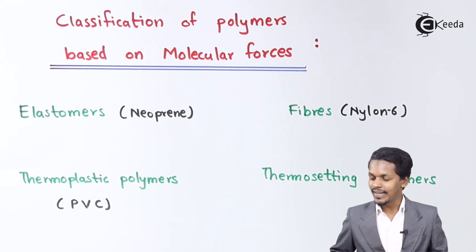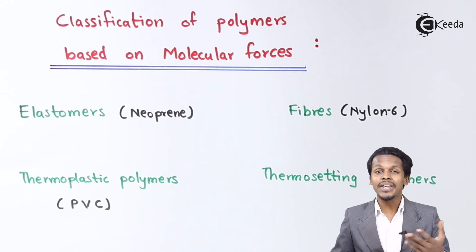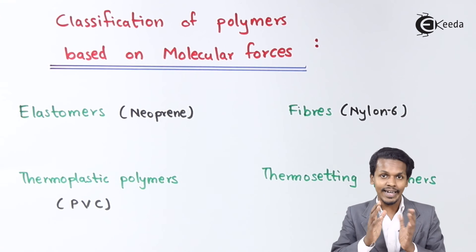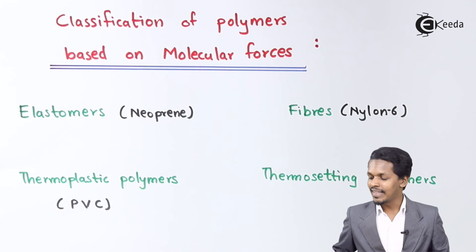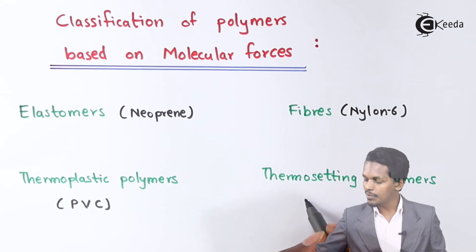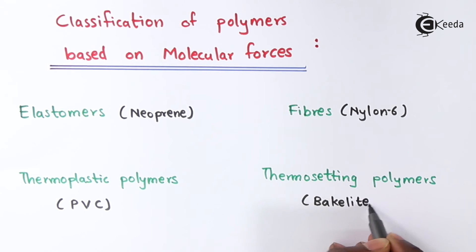Thermosetting polymers are polymers which cannot be reshaped or remolded once they have been given a shape. An example is Bakelite, which is a thermosetting polymer that cannot be reshaped after heating. These are the four classifications of polymers based on molecular forces.